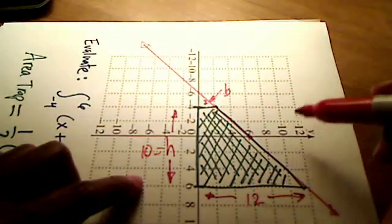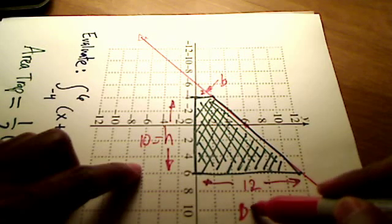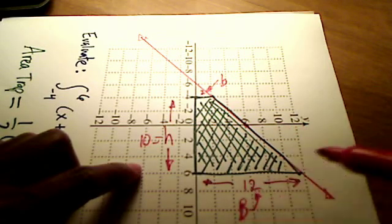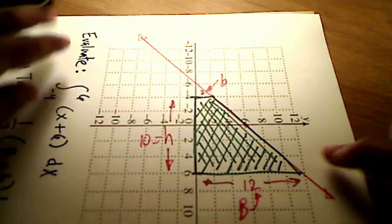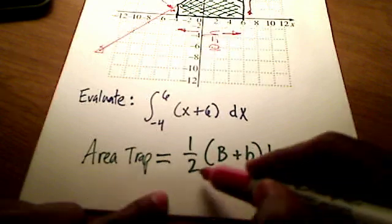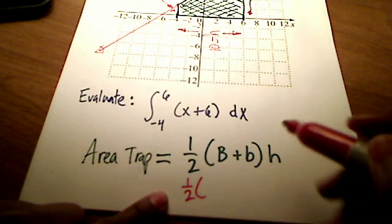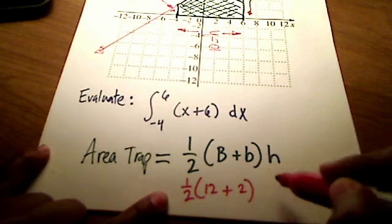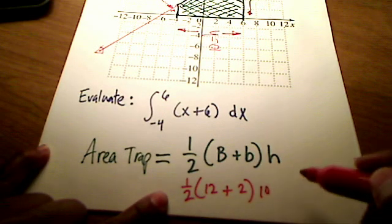This is my little b, this is my big B, capital B right here, and I've got a height of 10. So using my trapezoid area formula, what I have is 1/2, the big base, which was 12, plus the little base, which was 2, times my height, which is 10.